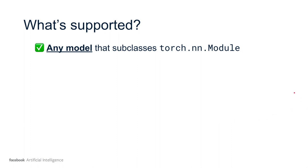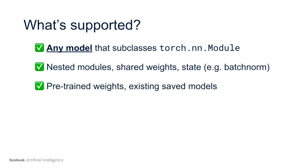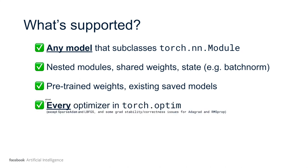What's supported by this library? It supports any model that subclasses torch.nn module. That's including third-party codebases, anything that branches off from this, even outside of the core PyTorch codebase. That means nested modules, modules with shared weights, state - so supports batch norm, pre-trained weights, existing saved modules. It doesn't matter if they were trained without knowledge of the existence of this library or by someone else, you can use this out of the box.